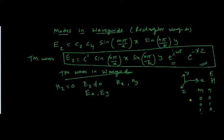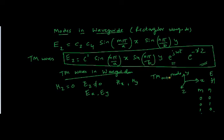Based on these values, the equation will take different values depending upon the value of m and n. In general, we define it as TM(m,n) mode. Depending upon the value of m and n, we can call it as that particular mode. For example, if m is equal to 0 and n equal to 1, then we call it TM01 mode, which means in all these equations we substitute m equal to 0 and n equal to 1.